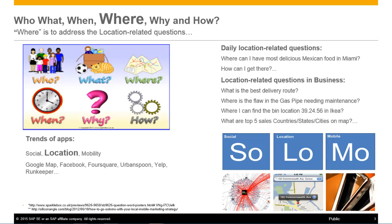It can be as simple as: where can I find the best Mexican food in Miami and how can I get there? Or more specifically in business, we can address location-related questions such as: what is the most direct delivery route, or locating issues with a gas pipeline needing maintenance. Or where can I locate bin location X in IKEA, for example. Or how can I represent the top five sales locations by country, state, or city.